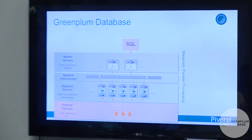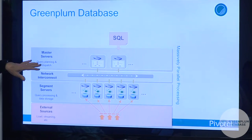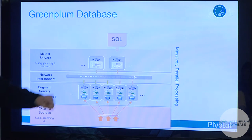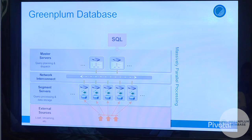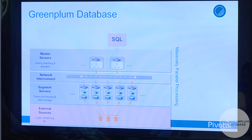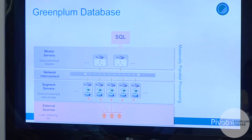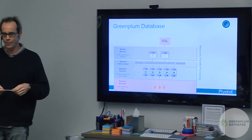Let's look at how Madlib fits into Greenplum database. A distributed parallel database has a master server, a mirror, a network interconnect, and multiple segment servers — Greenplum's term for worker nodes. Data is loaded from external sources and lives on the segments. SQL comes in through the master server, where query planning and cost-based query optimization are done. The query is dispatched to the worker nodes where query execution and processing actually happen — that's where the data is.